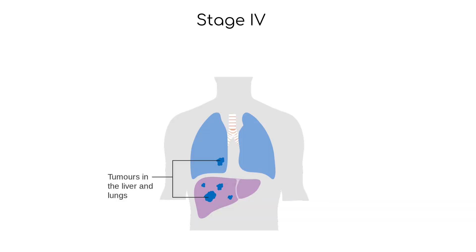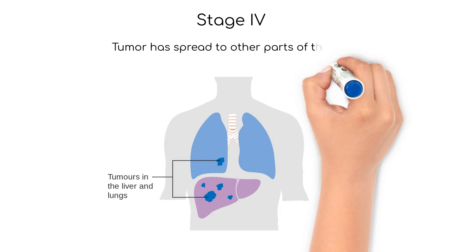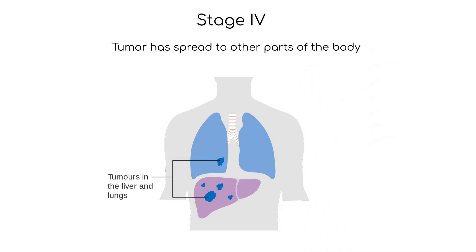Stage 4 is the most advanced stage of cancer when the cancer has spread to other parts of the body, such as the lungs, liver, or brain. At this stage the cancer is considered metastatic, which means it has the potential to grow and spread rapidly.